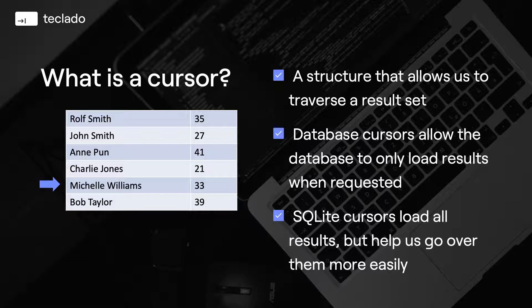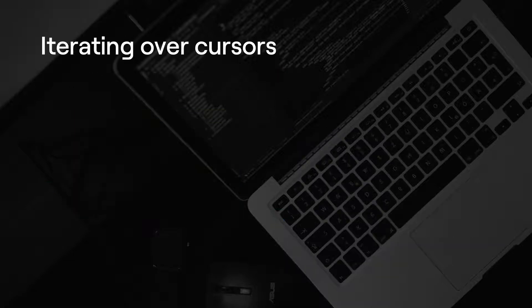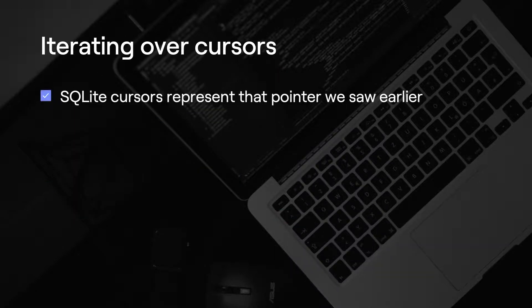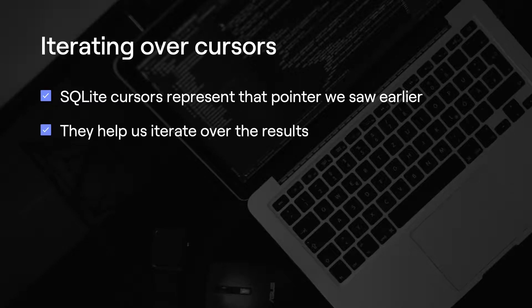We're going to understand more about what this means later on when we learn more about database cursors, but for now just bear with me on this one. For SQLite cursors, they represent that arrow — that pointer that we saw a moment ago. They help us iterate over the results or go over them one by one.